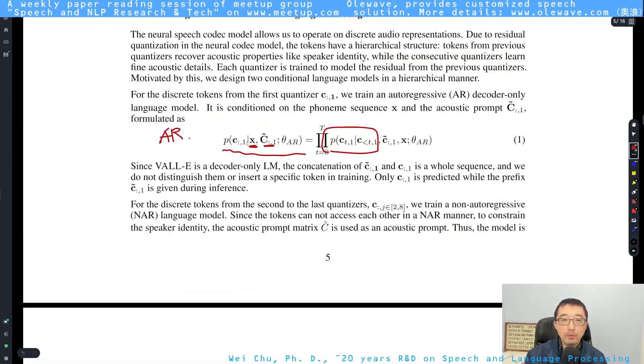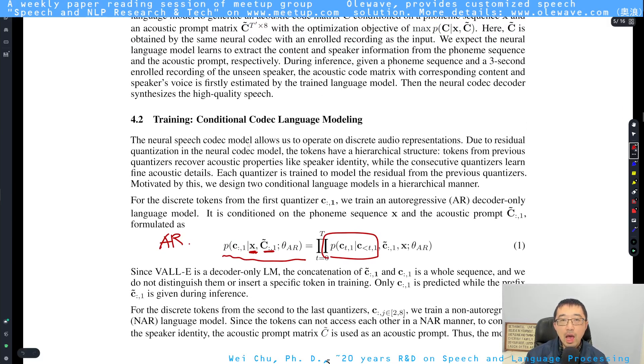So after they have the backbone or fundamental model, the key thing is how to encode the voice prompt and use that together with the text encoding. You can see that in part one, they use an autoregressive model to estimate the code of the first layer, or first quantizer, based on the text encoding and also the first quantizer output of the audio prompt. And you can see the probability or the conditional probability is estimated in this type of autoregressive style.